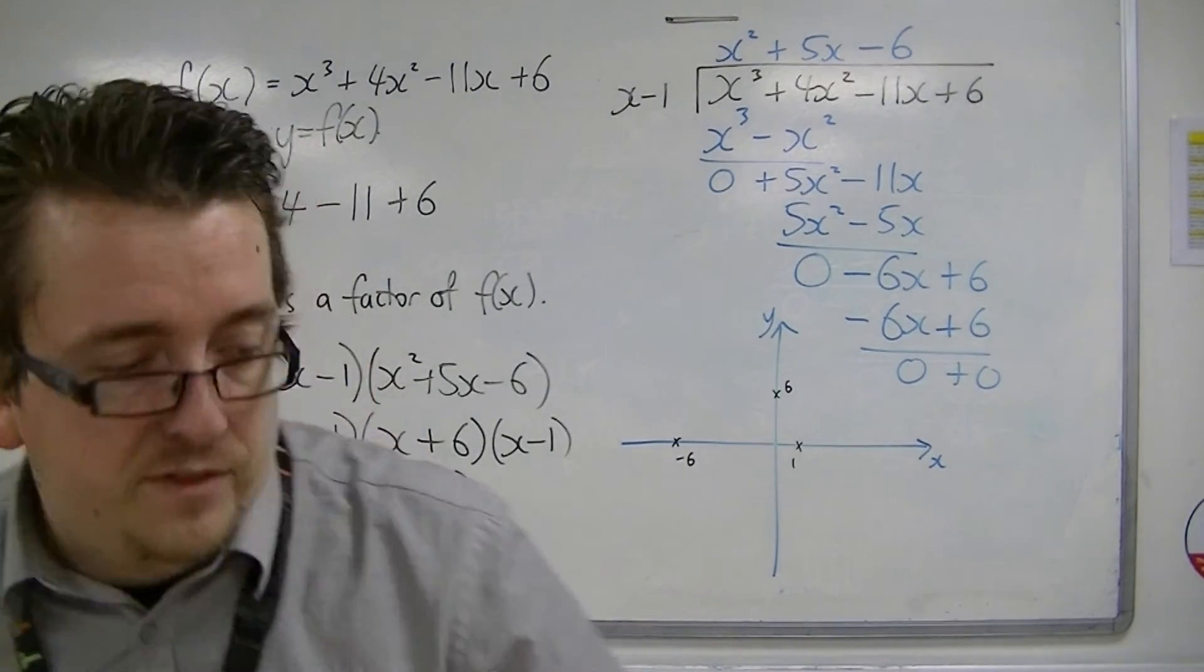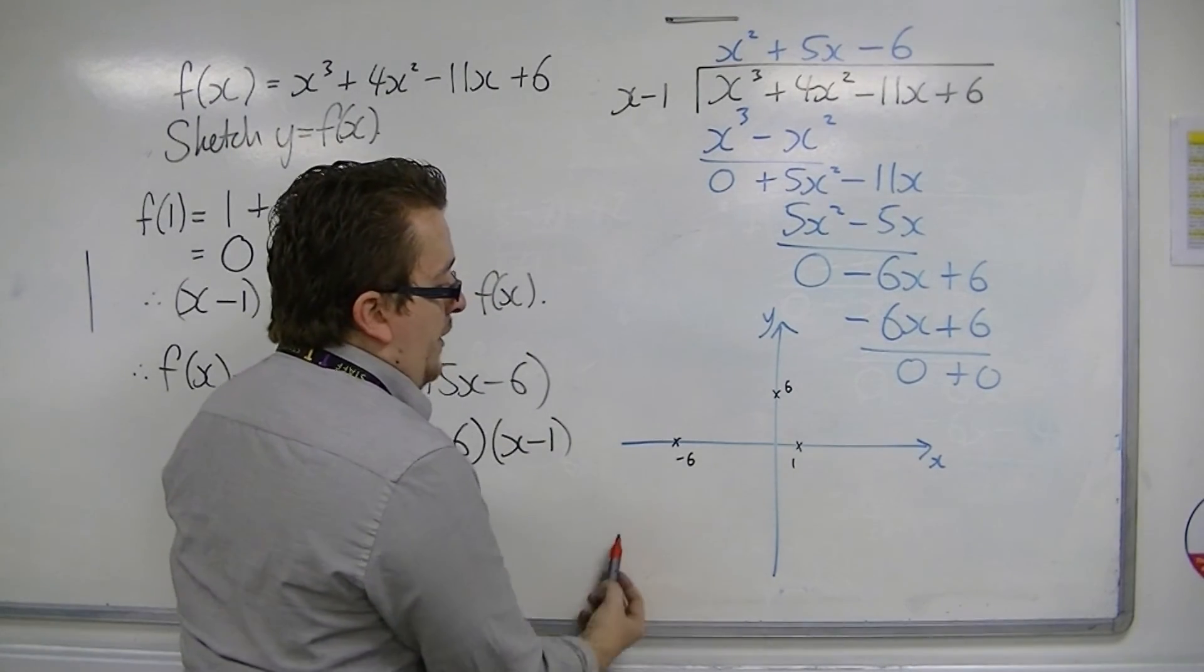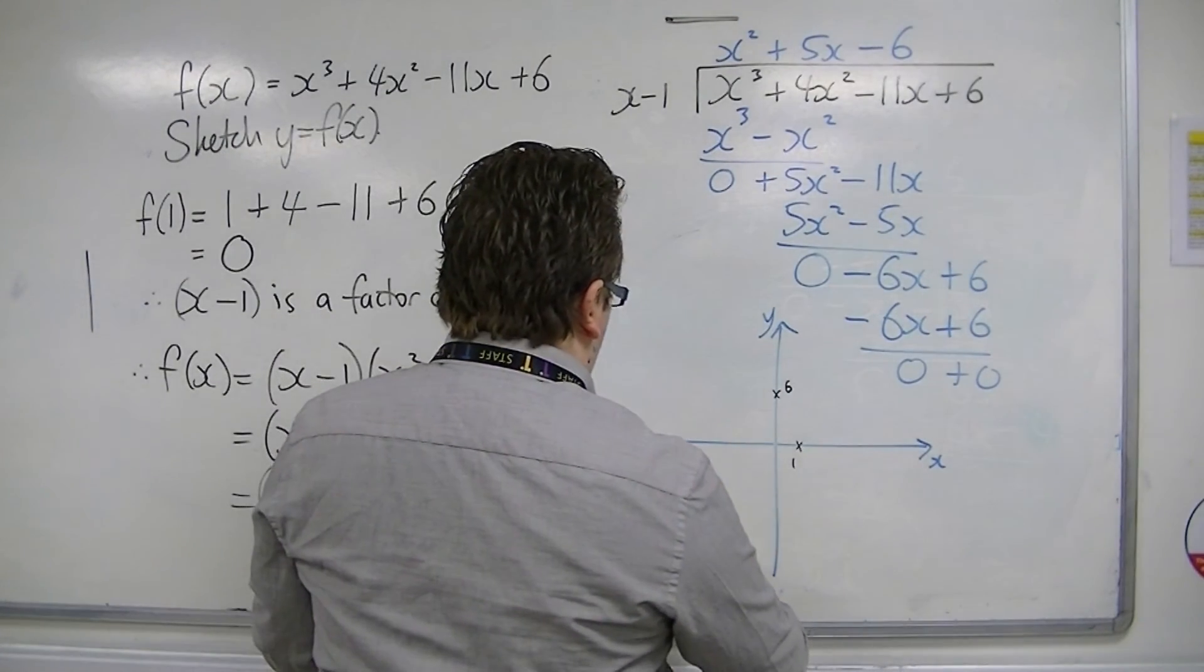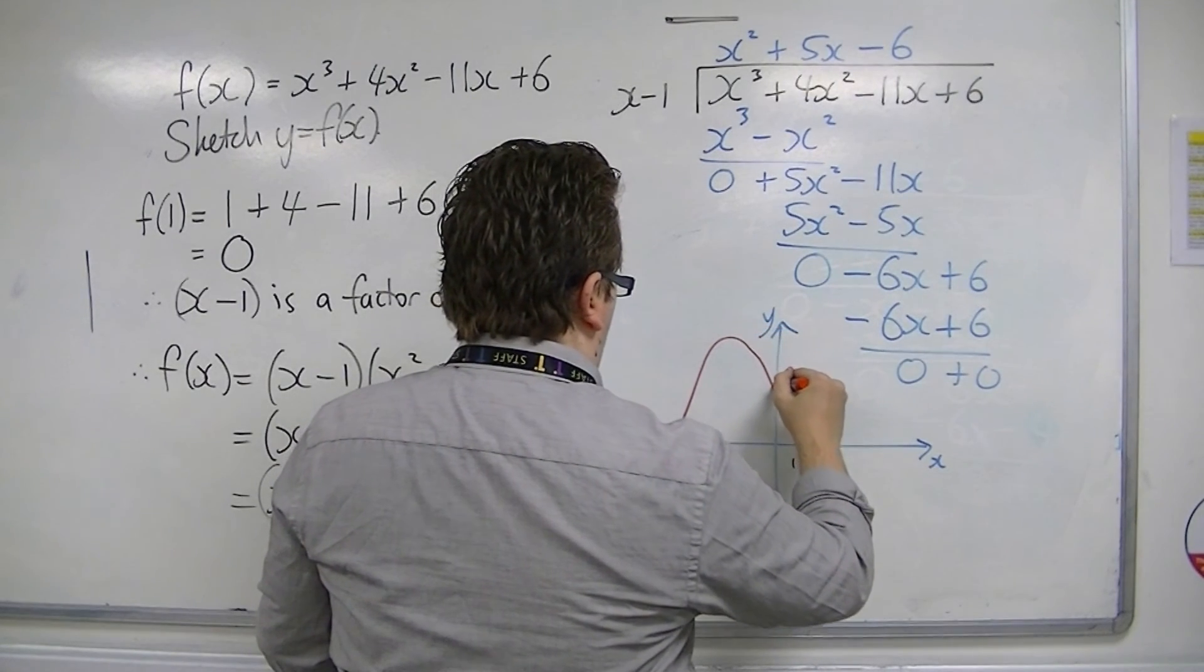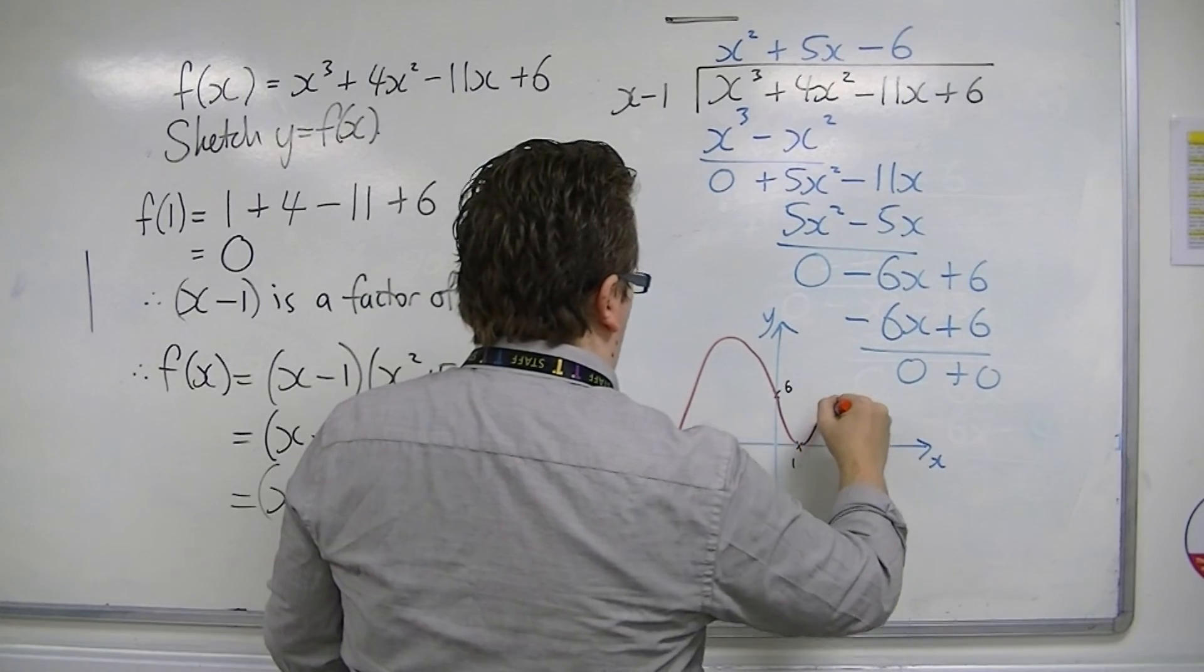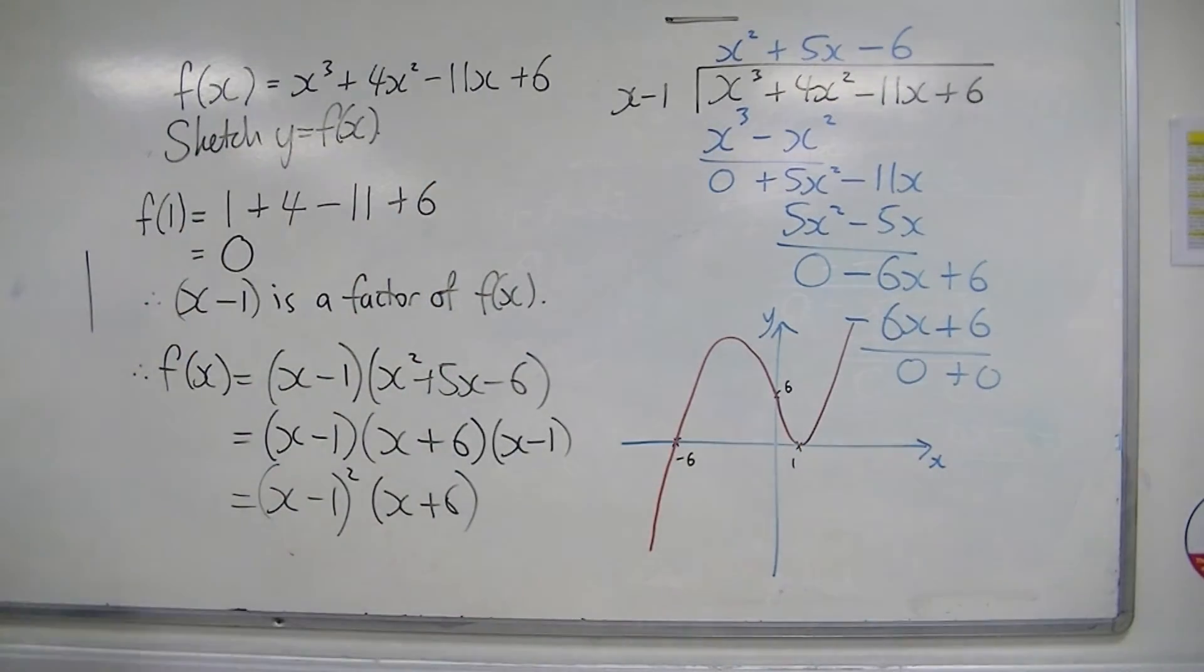So that means that it starts down at the bottom left. So we start down at the bottom left, we go through the minus 6, through the 6, it's a repeated root of 1, and then shoots off.